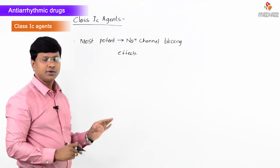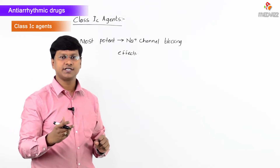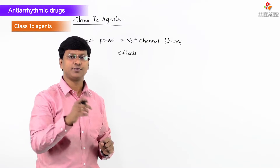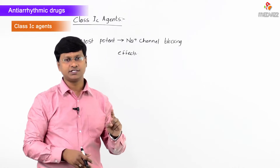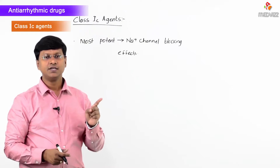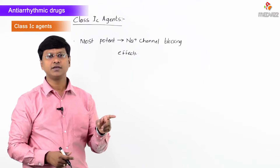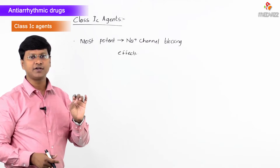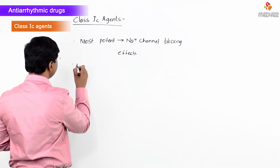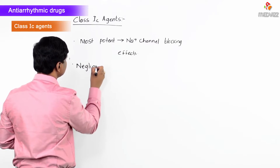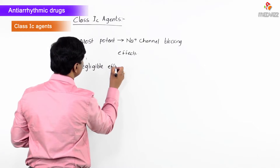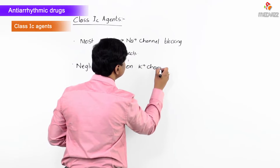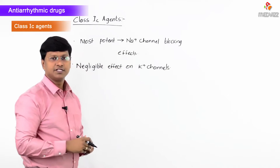Class 1 agents are classified into A, B, and C depending upon their action on potassium channels. Class 1A agents close the potassium channels, Class 1B agents open the potassium channels, whereas Class 1C agents have negligible effect on the potassium channels.